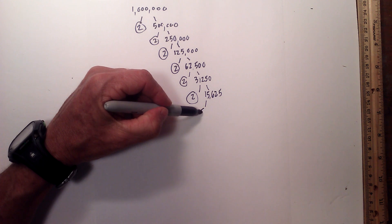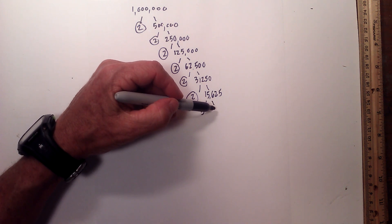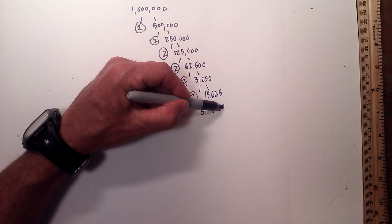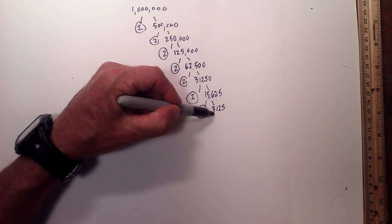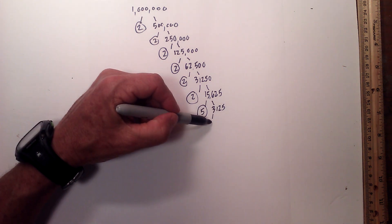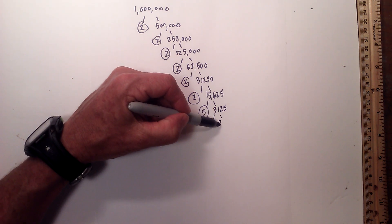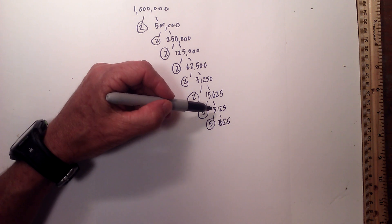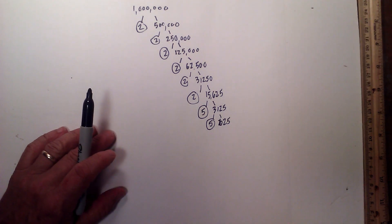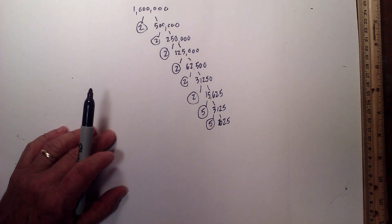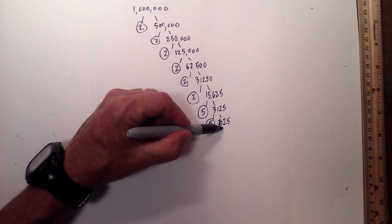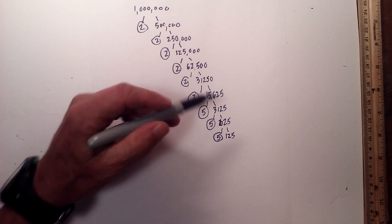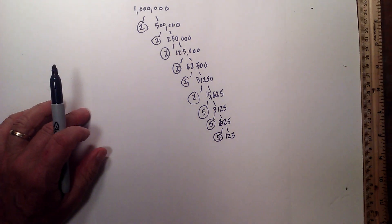Now we're getting close. 5 times 3,125 — circle the 5 because it is prime. Now we have 5 times 625 equals 3,125 — circle the 5 because it is prime. Now we have 5 times 125 equals 625 — circle the 5 because it is prime.